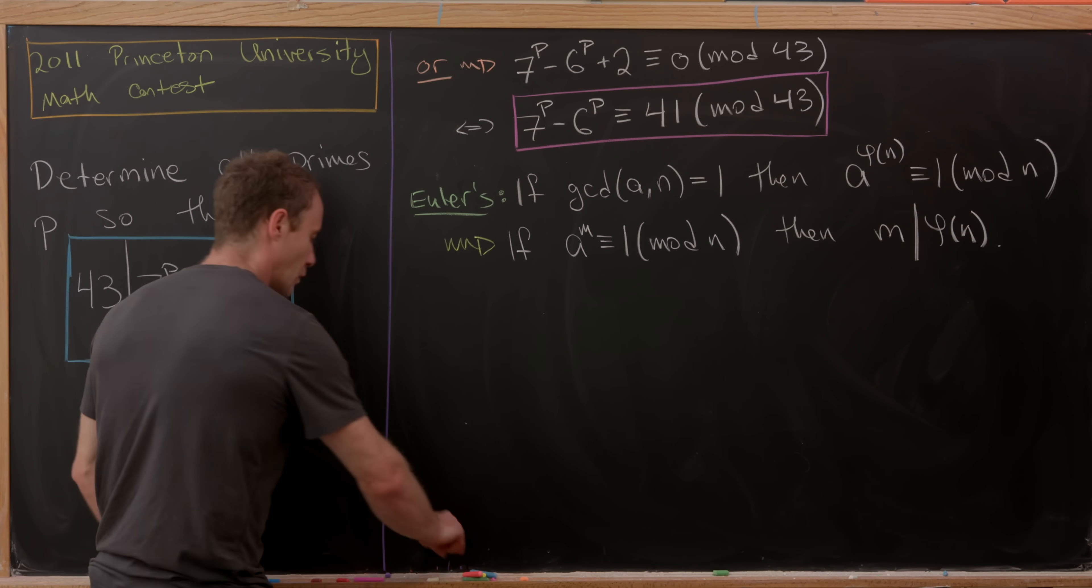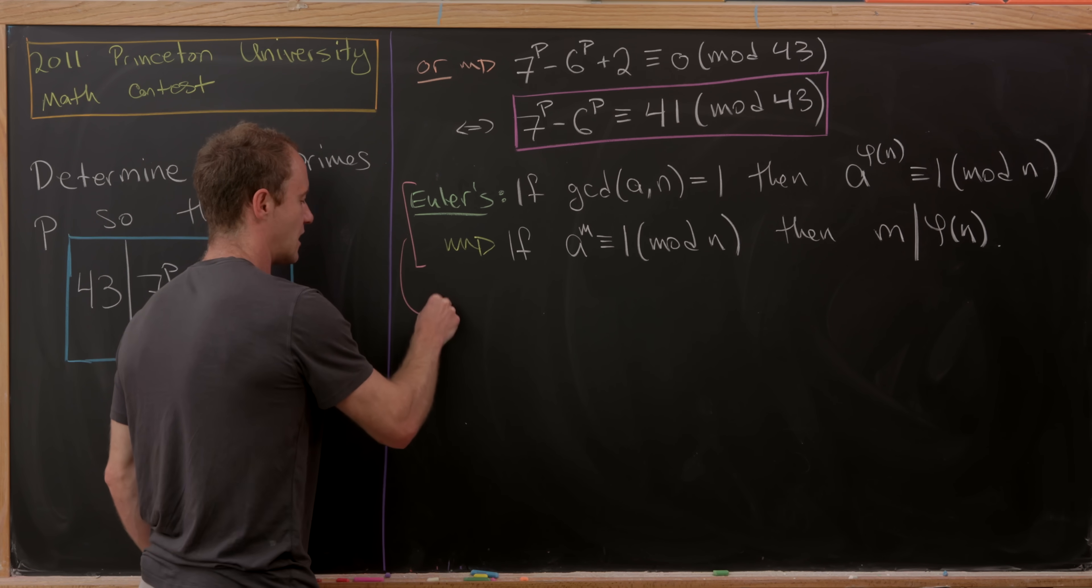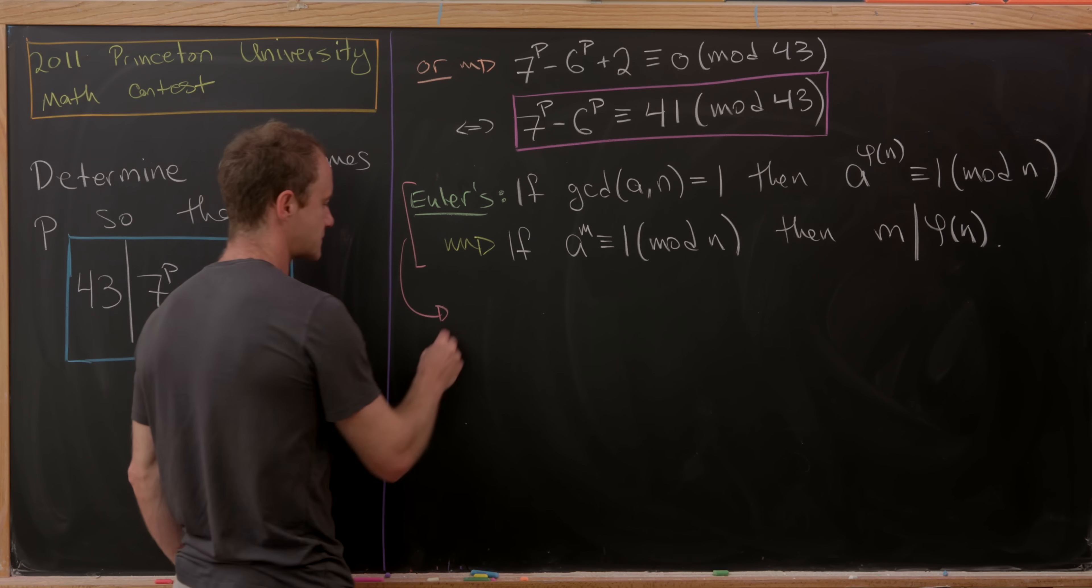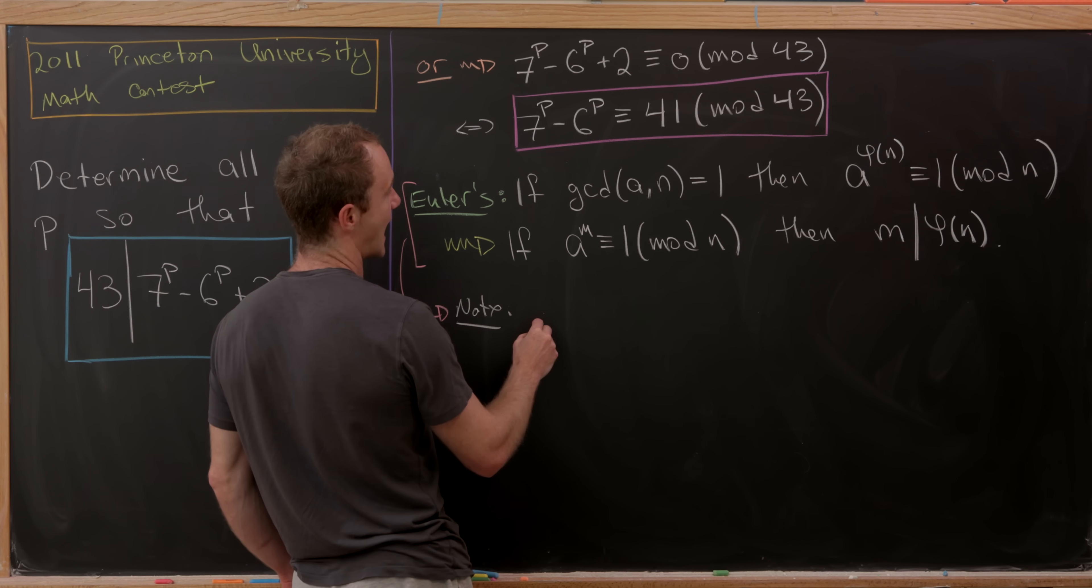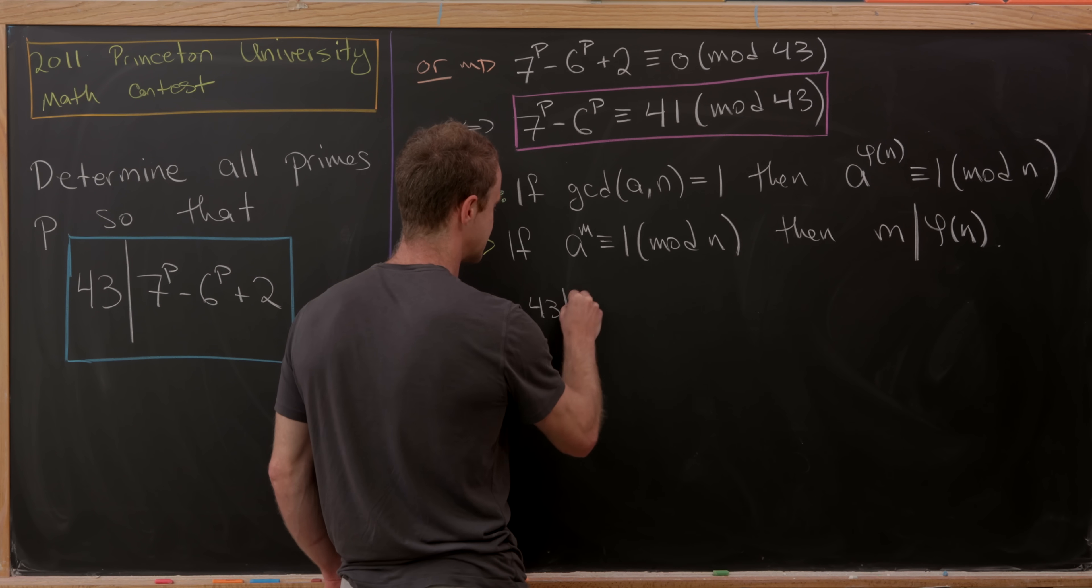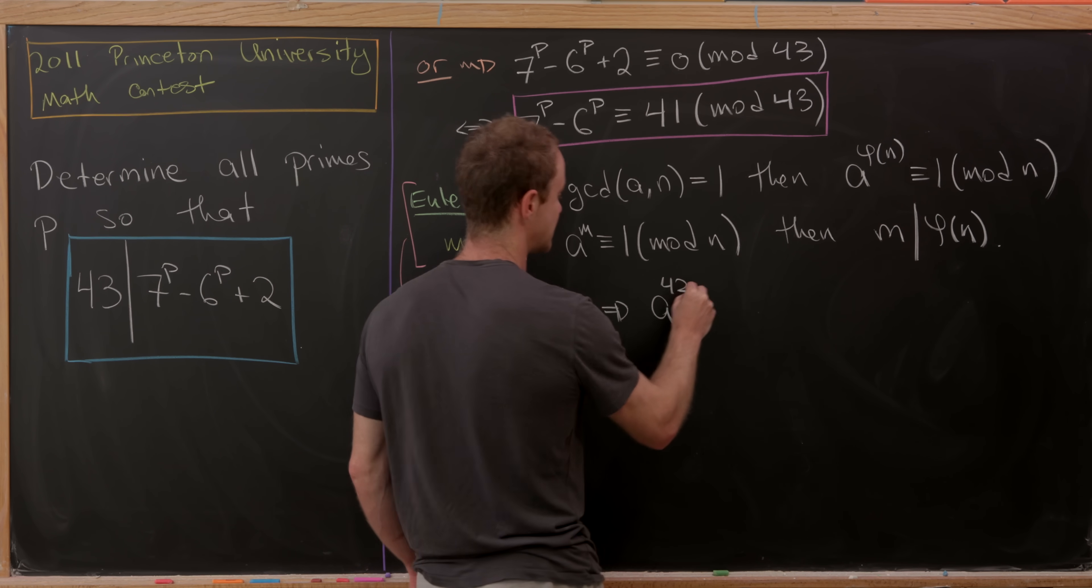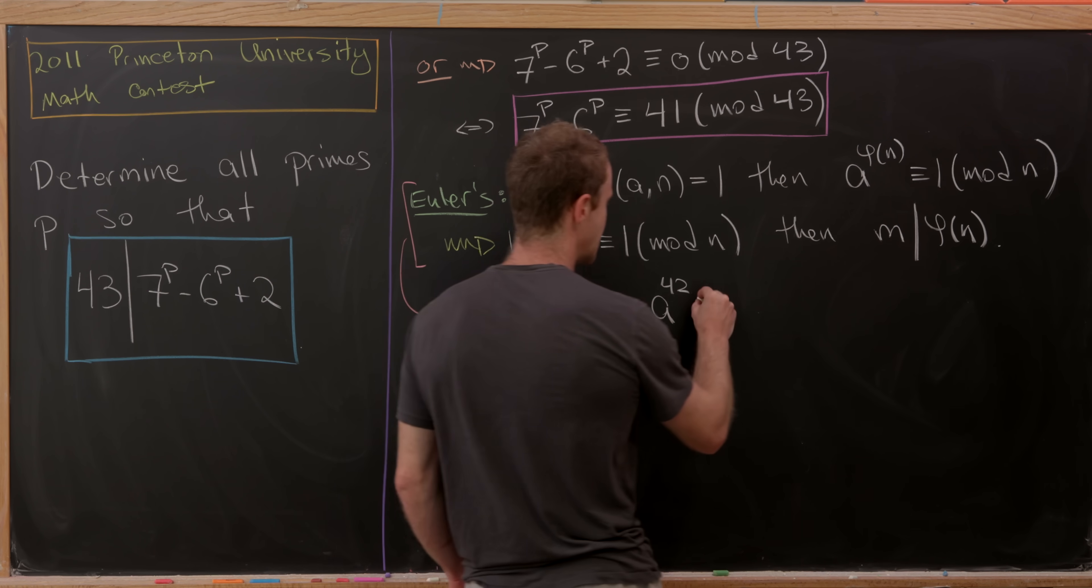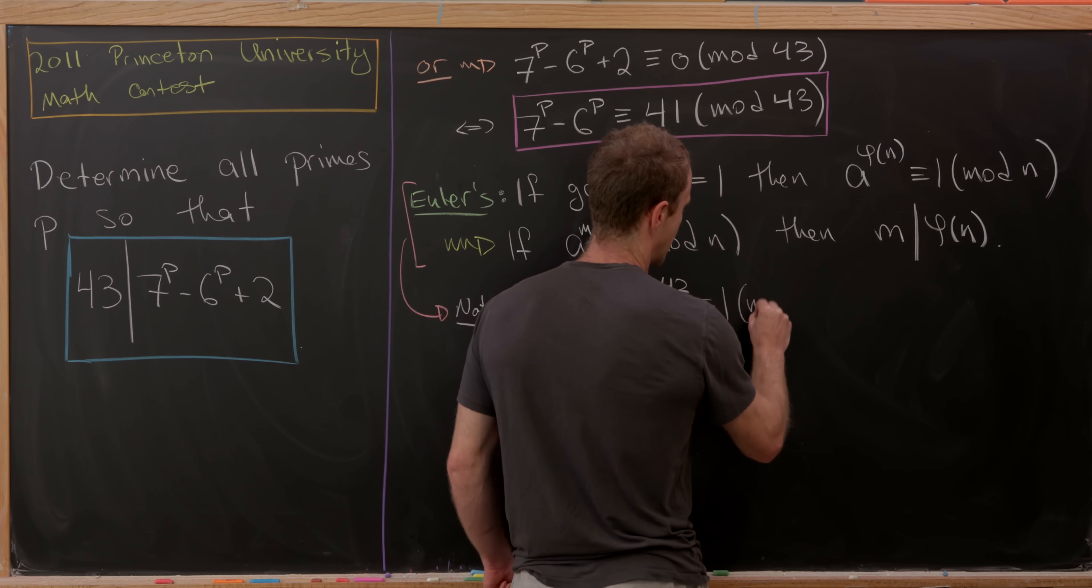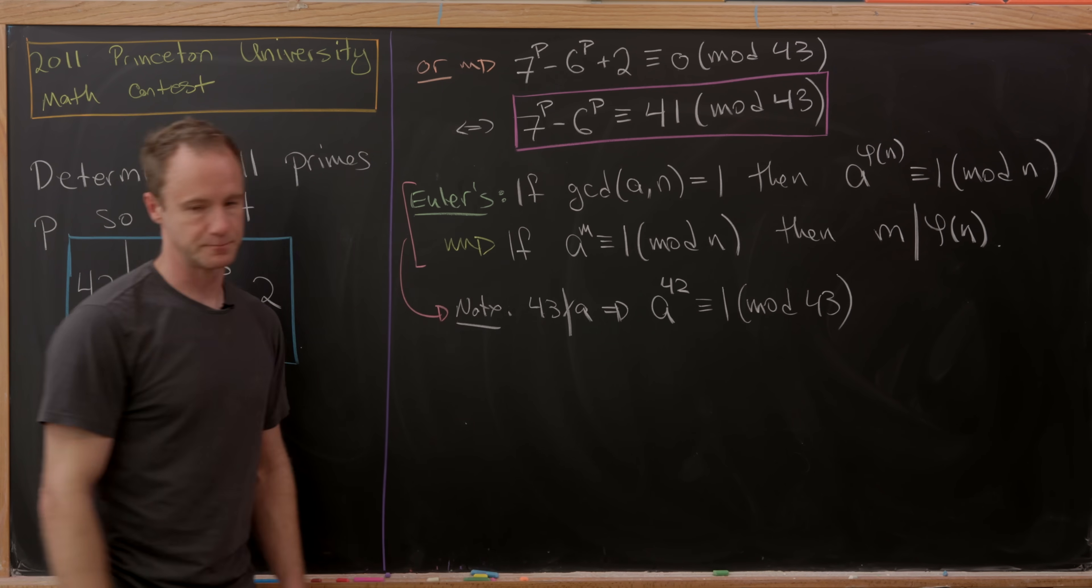So what can we do with this? Let's apply all of this to our problem. Let's note that as long as 43 does not divide A, then we know that A^42, which is φ(43) or 43-1, is congruent to 1 modulo 43. That's Fermat's little theorem.